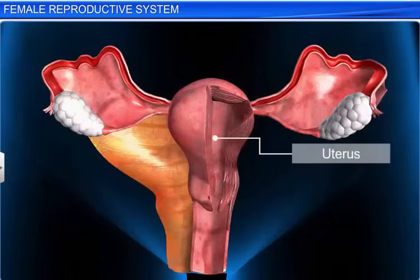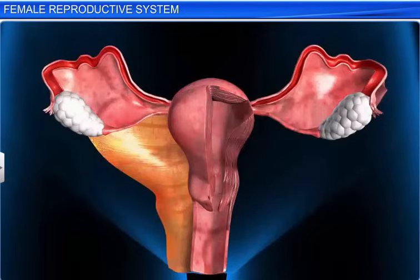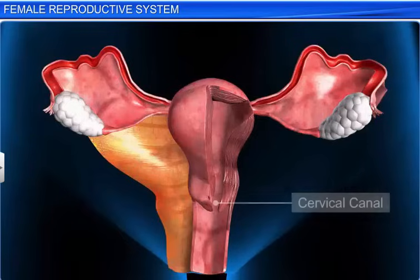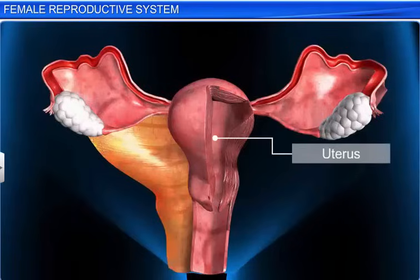The uterus opens into the vagina through a narrow cervix. The cavity of the cervix is called the cervical canal, which along with the vagina forms the birth canal. The wall of the uterus is composed of three layers of tissues.